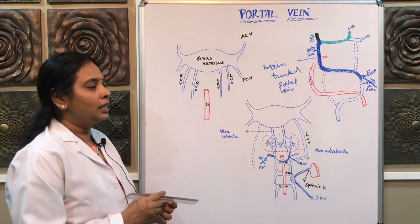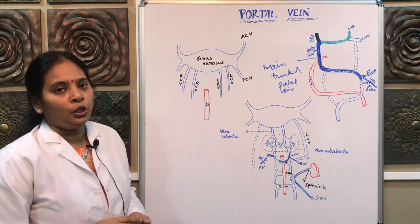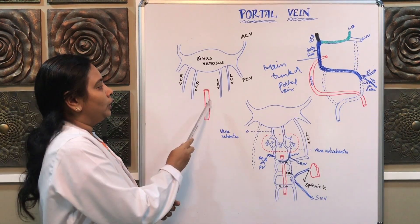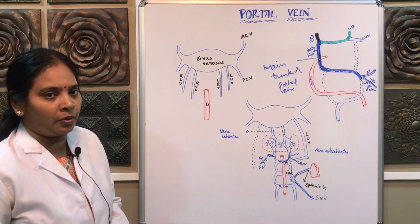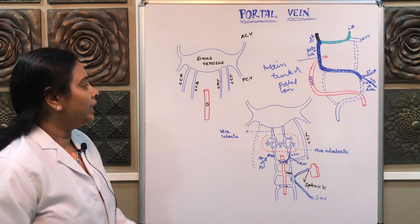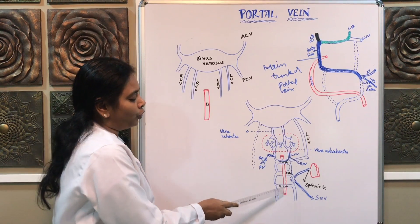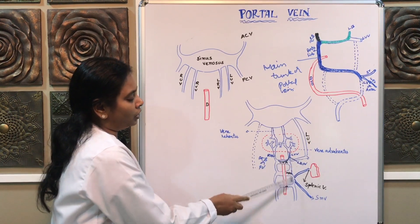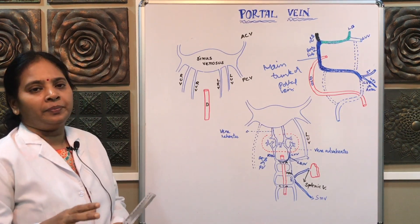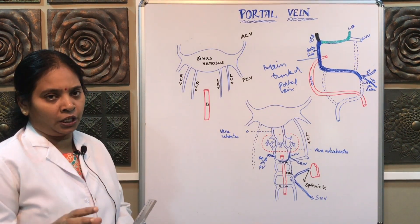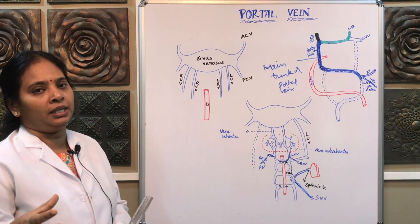The portal vein development will be developed from the vitelline veins. In both the right and the left vitelline vein, the lower portion surrounds the duodenum centrally. The duodenum is the part of the gut tube which develops from both the foregut and the midgut, so that is the central portion.